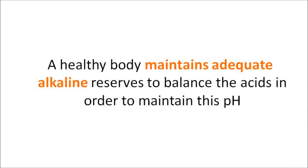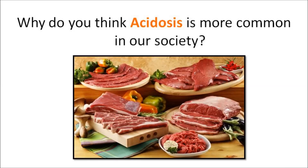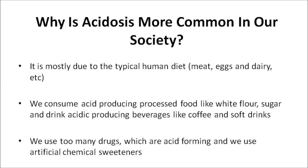A healthy body maintains adequate alkaline reserves to balance the acids in order to maintain this pH. Why is acidosis more common in our society? The reason is mostly due to the typical human diet, which is far too high in acid-producing animal products like meat, eggs, and dairy, and far too low in alkaline-producing foods like fresh vegetables. In addition, we consume acid-producing processed foods like white flour, sugar, and drink acid-producing beverages like coffee and soft drinks.